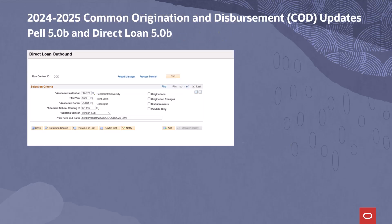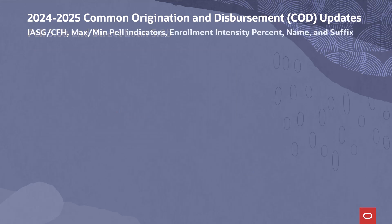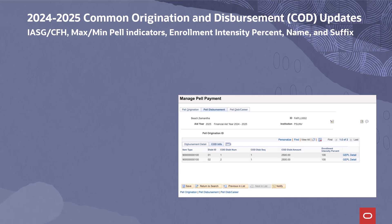We have delivered Field Length Updates, New Fields, Updated DMS Scripts and DAT files, as well as other code updates to support Direct Loan and Pell Grant Award processing based on the 2024-2025 Award Year 5.0b record layout. Updates have been delivered for Pell Grant Award processing to accommodate the IASG, CFH, Min-Max Pell Indicators, Enrollment Intensity Percentage, Name, and Suffix Modifications.